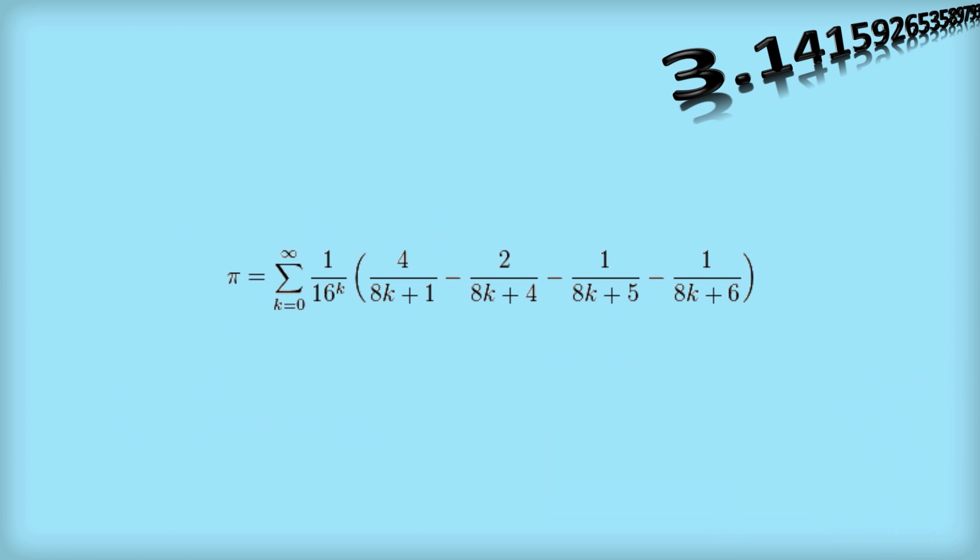Now this one is actually very special because this allows us to work out a digit, a nominated digit of pi in base 16, not base 10 in base 16, without working out all the digits before.